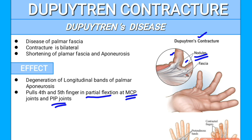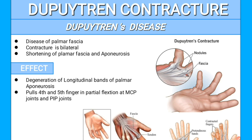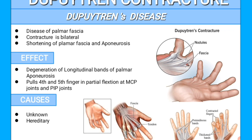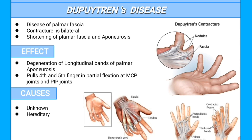This pulls the fourth and fifth fingers into partial flexion at the metacarpophalangeal joint and proximal interphalangeal joint. There are two causes of Dupuytren's contracture: the first is idiopathic and hereditary. In the image, we have a Dupuytren's hand showing contracted fingers. The pre-tendinous bands of the palmar fascia and palmar aponeurosis cause the formation of nodules.